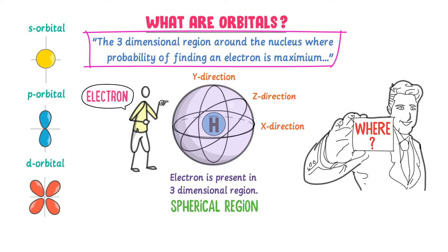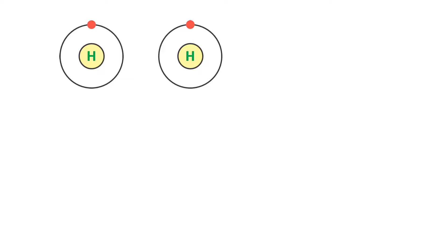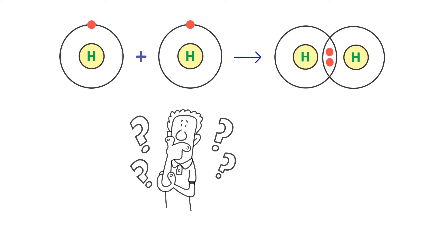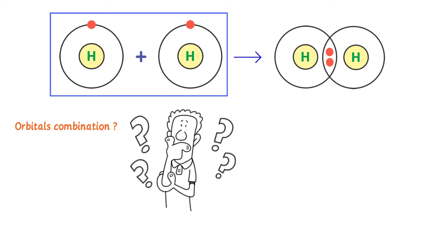Now let's consider this hydrogen atom and this hydrogen atom. We know that each hydrogen atom has one electron. These two hydrogen atoms will react with each other to form a hydrogen molecule, H₂. Have you ever wondered how the orbitals of hydrogen atoms combine together to form a hydrogen molecule? What about the shape of the hydrogen molecule?